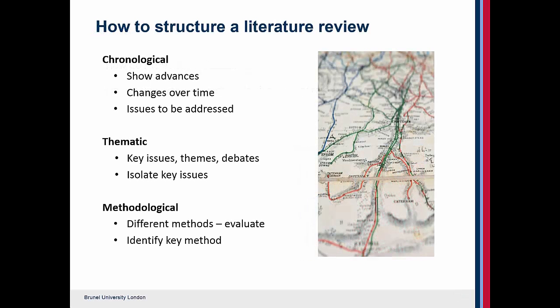There are different ways of structuring a literature review. The first way is in terms of chronology. You might want to show advances and changes over time, or look at particular issues you want to address in your literature review — focusing on timeline but also issues at the same time.